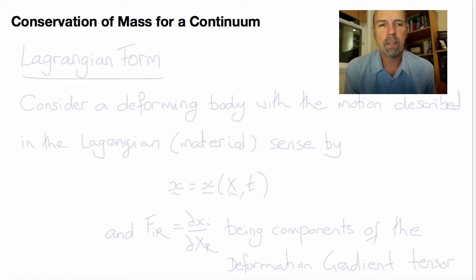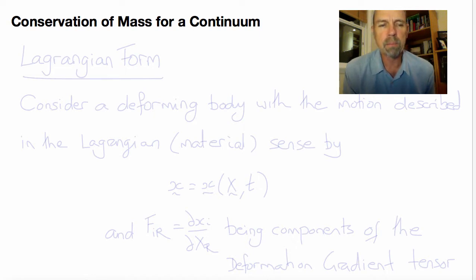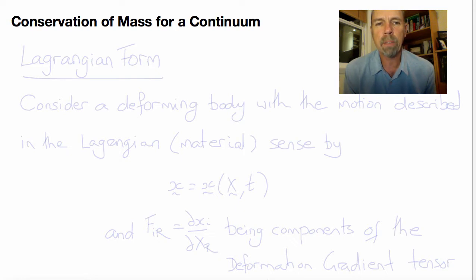Welcome back to BE 110. Today we're going to begin deriving the conservation laws for continua by deriving the conservation of mass. There are actually two versions of conservation of mass for a continuum. They represent the same physical principle, but one of them is a Lagrangian form — mass conservation as seen by a material observer — and the other is an Eulerian form, mass conservation as seen by a fixed spatial observer.